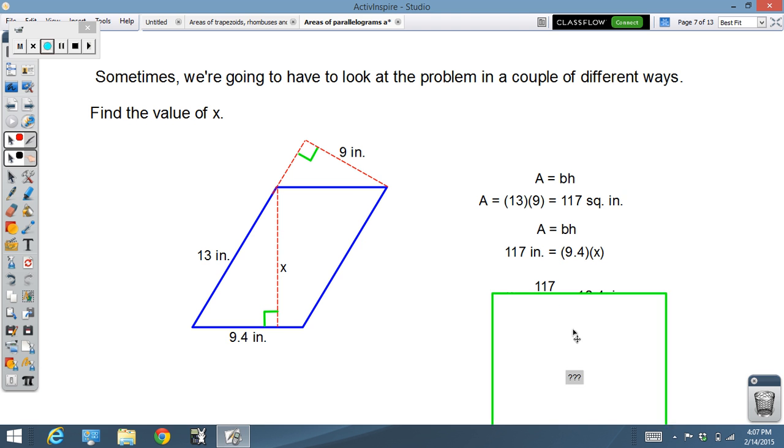We'll take the area using this base and this height. We find our area is one seventeen. Now that we have one seventeen, we can look at the second base and the second height and solve for x. Area equals base times height. Now we're working our way backwards to solve for x. The x comes out to be twelve point four. So sometimes we've got to look at the problem both ways.